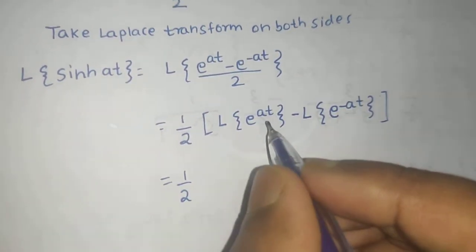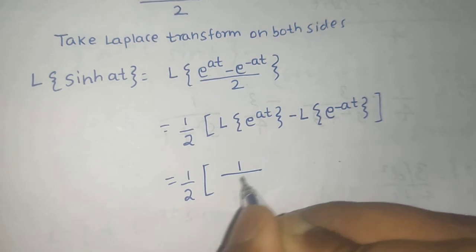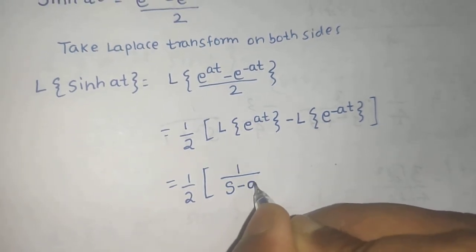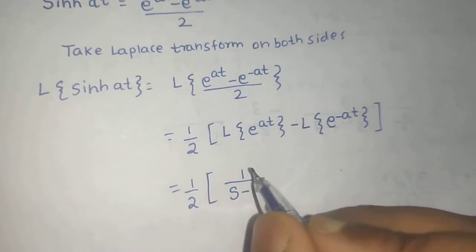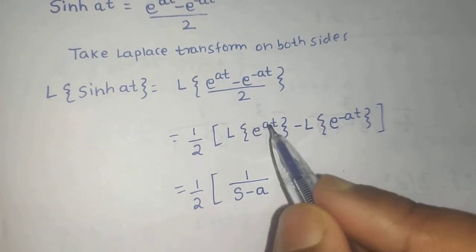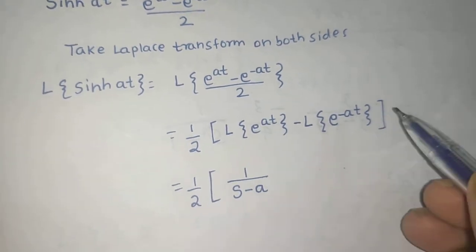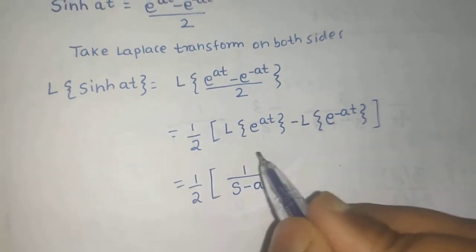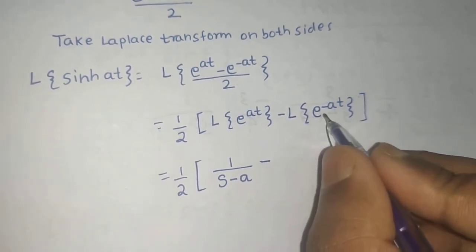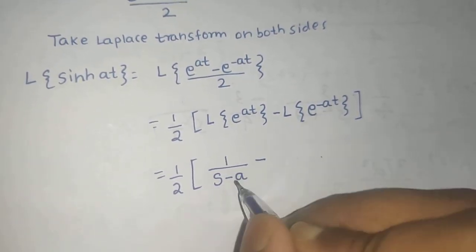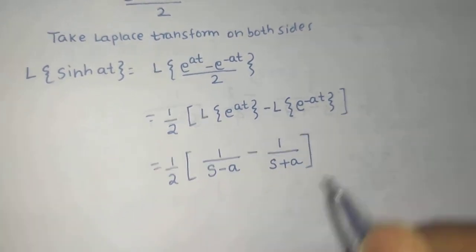The Laplace of e raised to power AT is 1 upon S minus A — a direct formula we have derived. You could also use the definition and write it as the integral from 0 to infinity of e raised to power minus ST times e raised to power AT dT, and you'd get the same result. Minus the Laplace of e raised to power minus AT gives 1 upon S plus A.